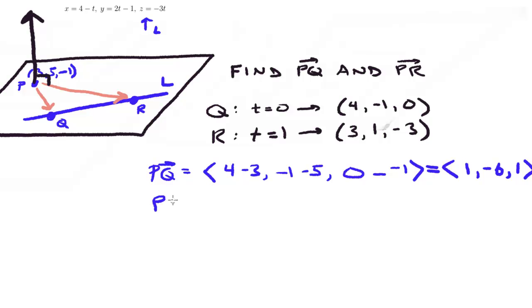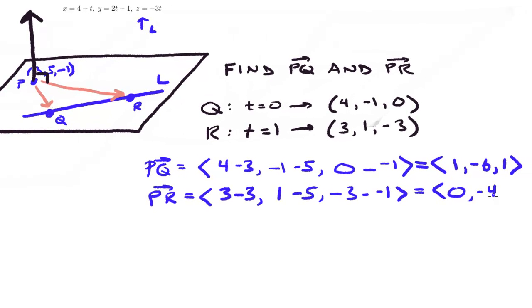So we're going to go ahead and do the same thing for PR. We're going to subtract the components. So we'll start with 3 minus 3, then do 1 minus 5, and then -3 minus -1. Simplify that. You'll get <0, -4, -2>.